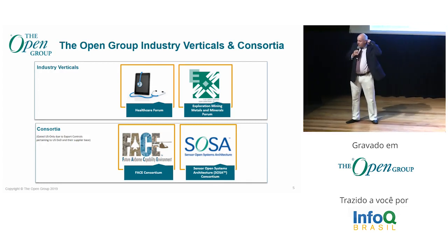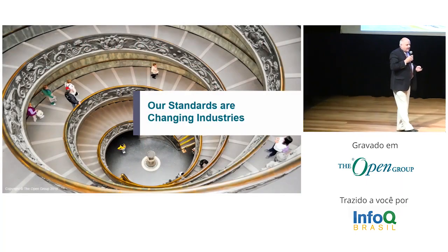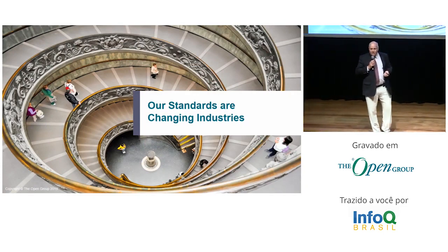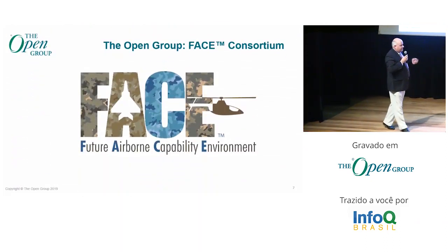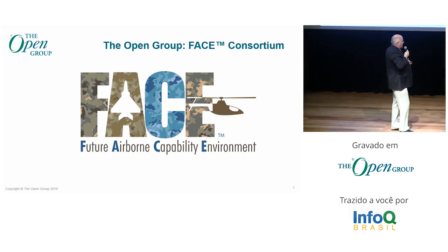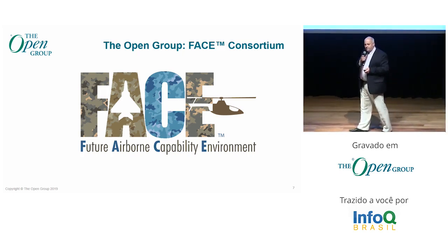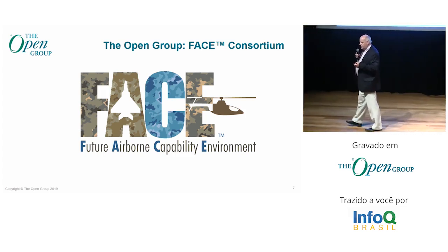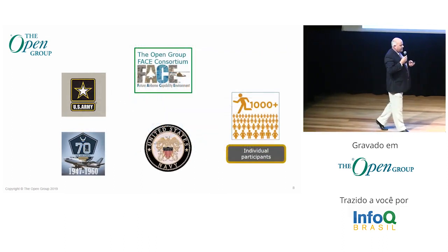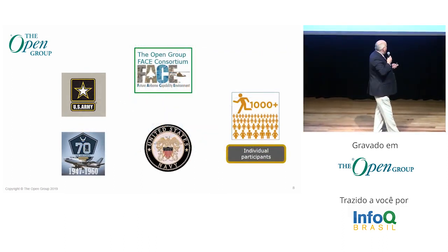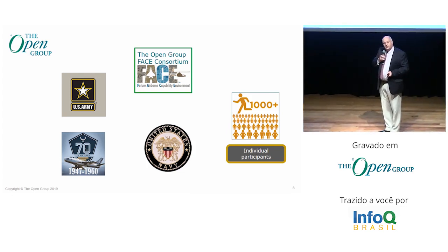FACE and SOSA — I'll talk about one of those, and my colleague Jim will talk about the other. What I want to show you is that the standards we're producing are fundamentally changing the ways that products are procured and supplied in various industries. I'll start with the FACE consortium. This is about federal avionics in the United States. This group involves the US Army, Air Force, Navy, and over a thousand individual participants, plus virtually every major organization on the supplier side — Boeing, Rockwell Collins, Lockheed Martin — they're all participating.